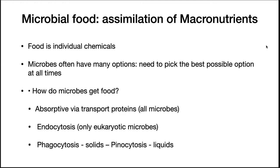How do we get nutrients into a cell? Microbes often have many options and need to pick the best possible option for getting a nutrient. For example, if glucose is available and also harder-to-digest cellulose, the microbe will use glucose first. All microbes have transport proteins that facilitate passage through the cellular membrane. Eukaryotes also have the endocytotic pathway to bring material into the cell, transporting solids via phagocytosis and liquids via pinocytosis.